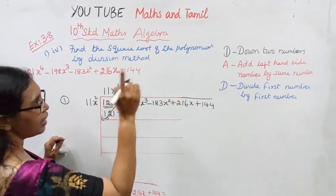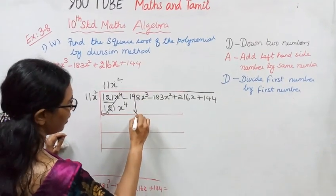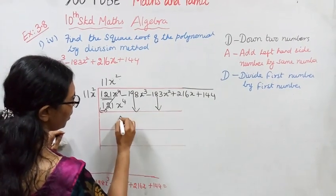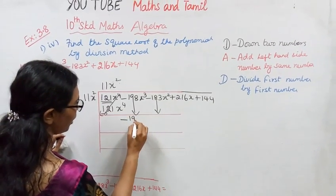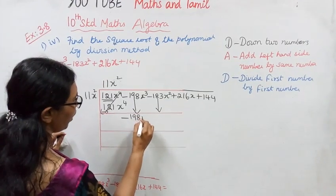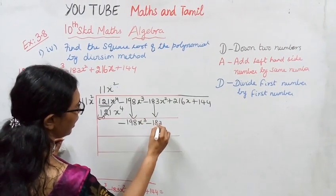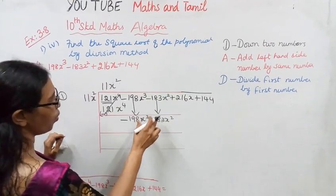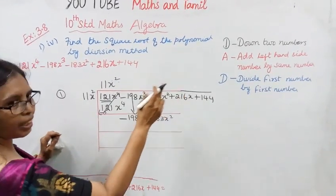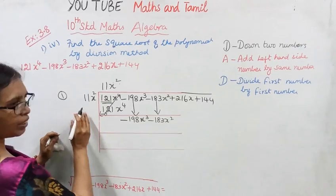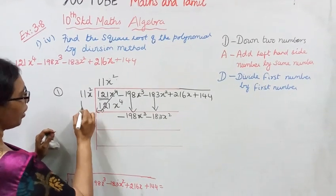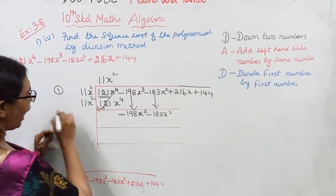After the first step, down 2 numbers. Down 2 numbers. Sign carefully: -198x³, -183x². Down 2 numbers. Add left hand side number by same number. Left hand side number is 11x².